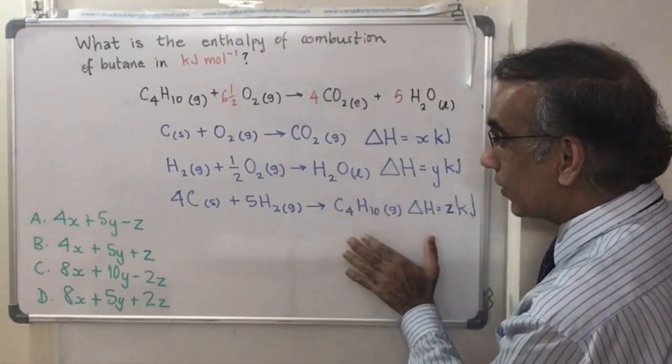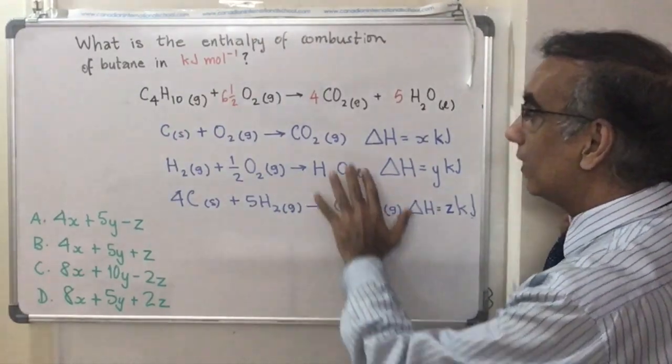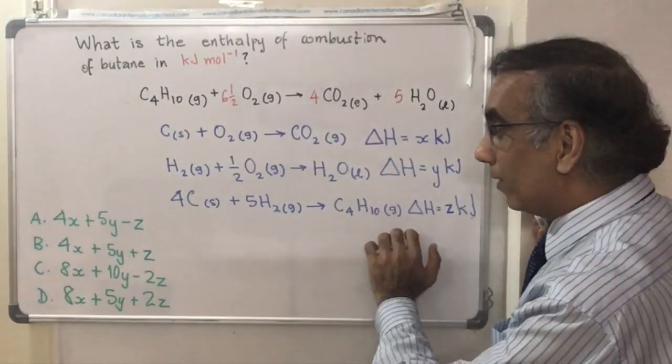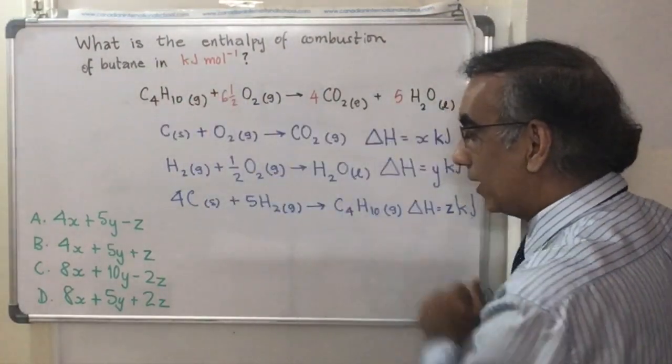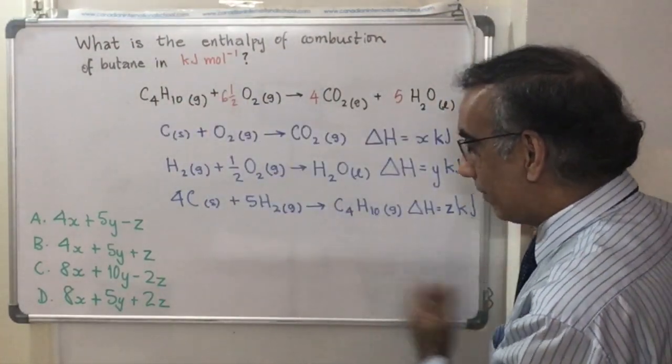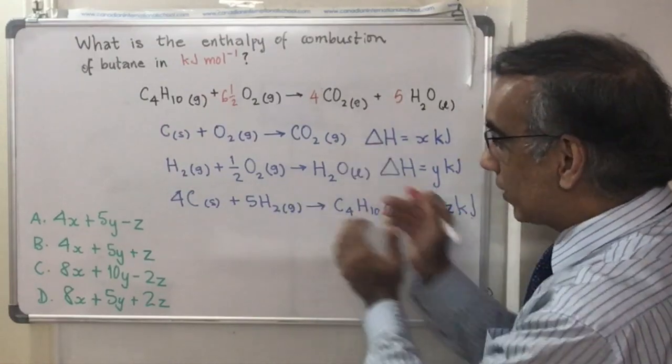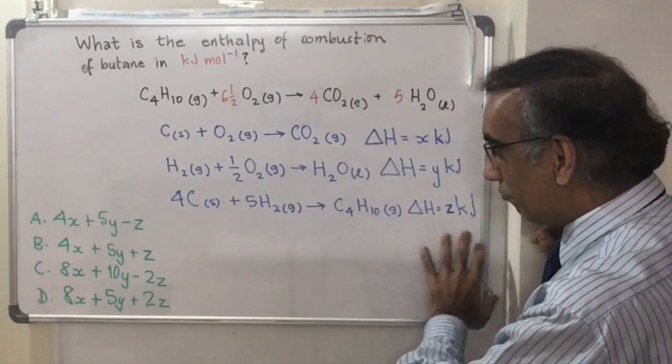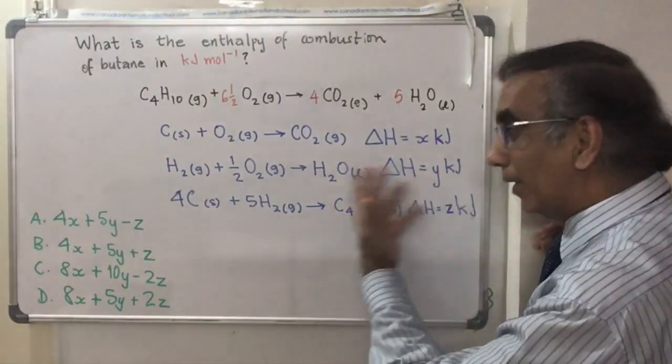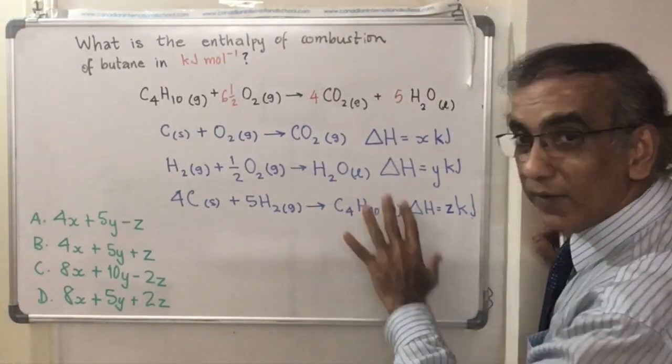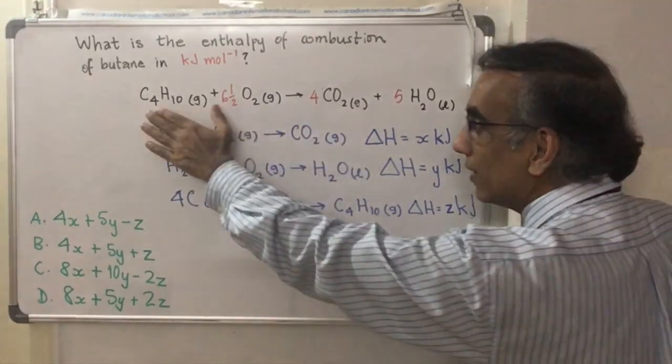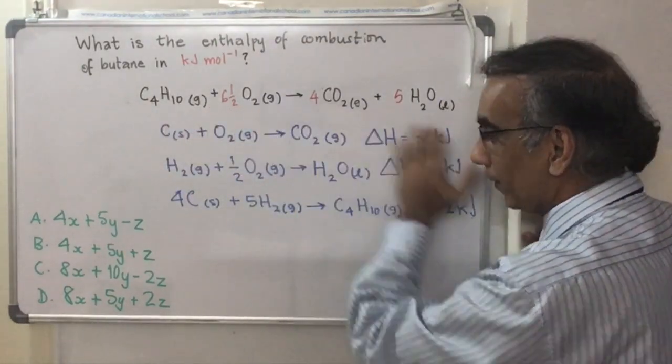Looking at this, these three must be manipulated and then the cancellation method must be carried out so that you'd end up with the equation that you seek. So the cancellation method means you're going to have to manipulate these three equations, reversing them if needed, multiplying them if needed, so that what would be left standing after you've canceled would be the very things in the reaction in question.